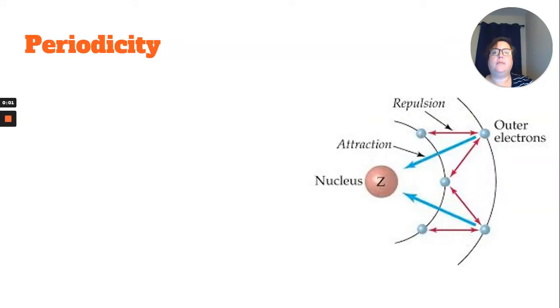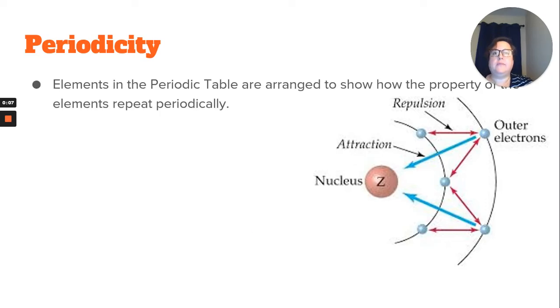So periodicity, we have that repeating pattern of properties happening on our periodic table. That's the way it's arranged.